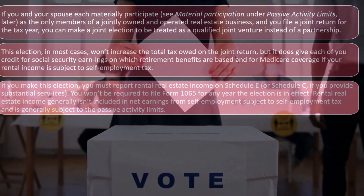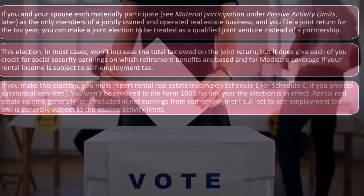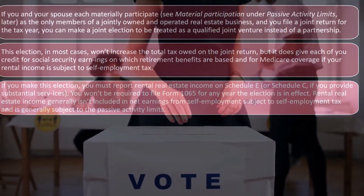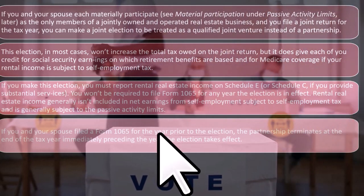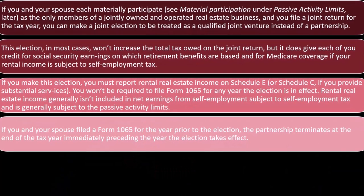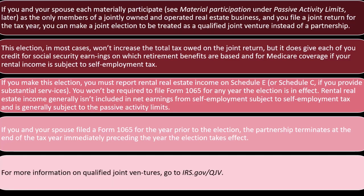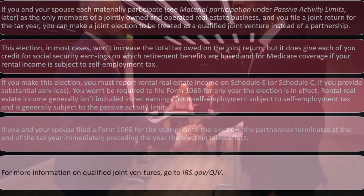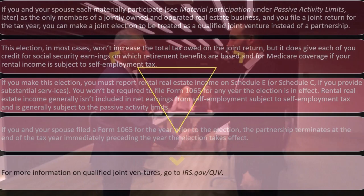Rental real estate income generally isn't included in net earnings from self-employment subject to self-employment tax — it's generally subject to the passive activity limits. If you and your spouse filed a Form 1065 for the year prior to the election, the partnership terminates at the end of the tax year immediately preceding the year the election takes effect. So if you decide you no longer need the partnership tax return and drop it, the partnership will basically dissolve, and you'll be reporting on Schedule C.